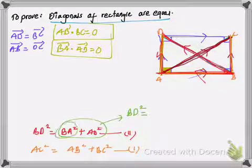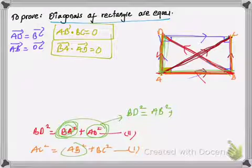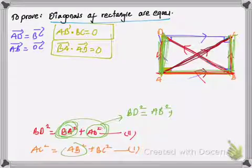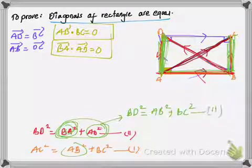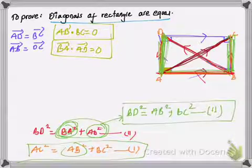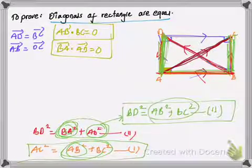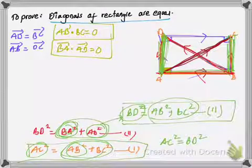Now looking at our second equation: BA squared and AB squared mean the same thing, so for BA² I can write AB². Also, AD squared is the same as BC squared, since the lengths of opposite sides of a rectangle are equal — the length of side AD equals the length of side BC. So the revised second equation becomes BD² = AB² + BC². Comparing equation one and equation two, the right-hand sides are both AB² + BC², so the left-hand sides must also be equal: AC² = BD².